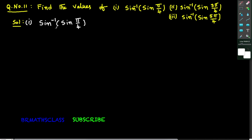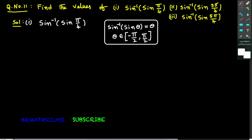Find the value of sin inverse of sin π/4. You observe this question. This is of the form sin inverse of sin θ. From properties of inverse trigonometric functions, we learn this formula: sin inverse of sin θ equals θ, when θ belongs to the closed interval [−π/2, π/2].